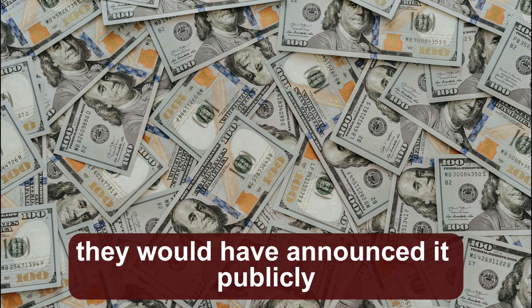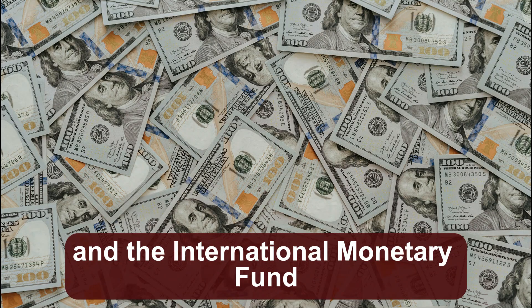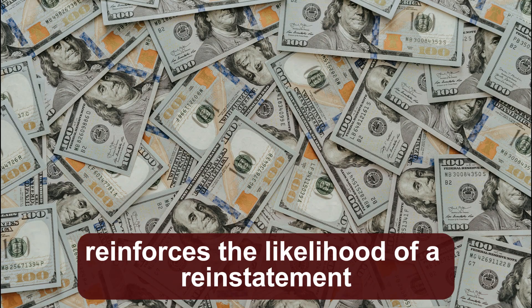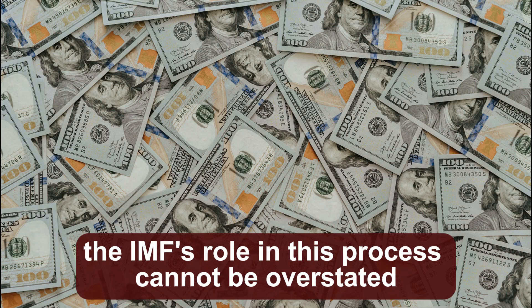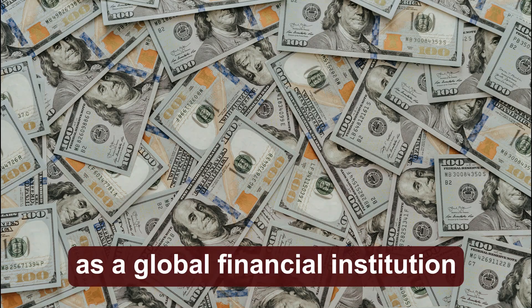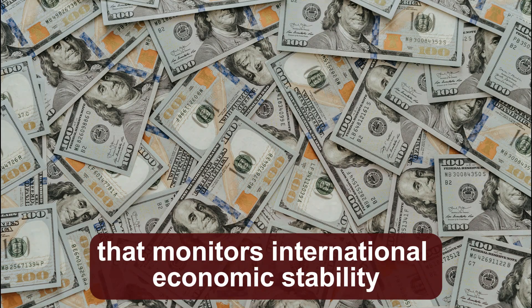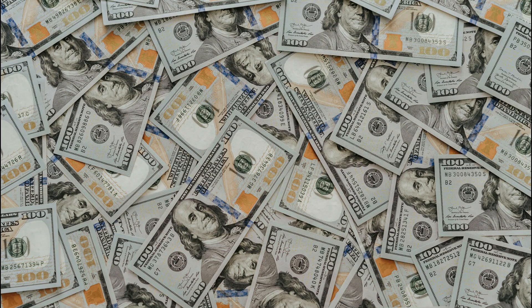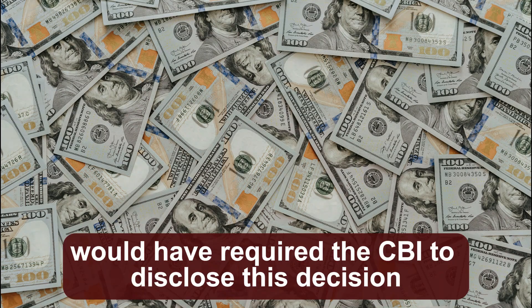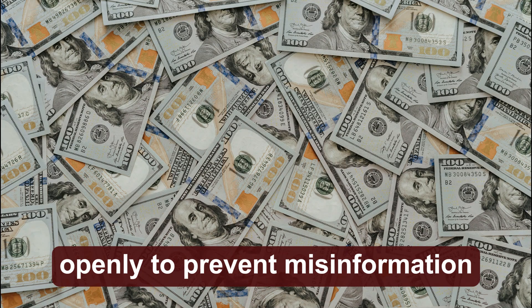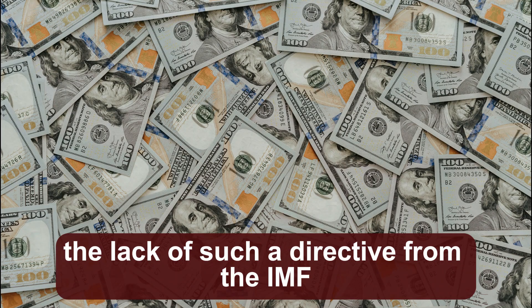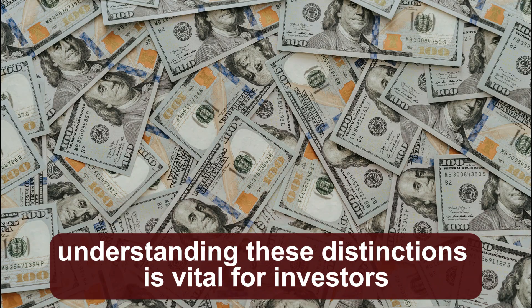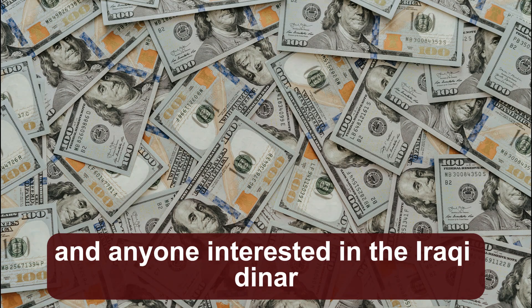If the CBI were planning a LOP, they would have announced it publicly, and the International Monetary Fund would have ensured that this information was communicated transparently. The absence of such an announcement reinforces the likelihood of a reinstatement rather than a LOP. The IMF's role in this process cannot be overstated. As a global financial institution that monitors international economic stability, the IMF plays a crucial role in ensuring that member countries adhere to transparent and sound financial practices. If Iraq were planning a LOP, the IMF would have required the CBI to disclose this decision openly to prevent misinformation and manage market expectations. The lack of such a directive from the IMF suggests that the current direction of the CBI aligns more closely with a reinstatement strategy.